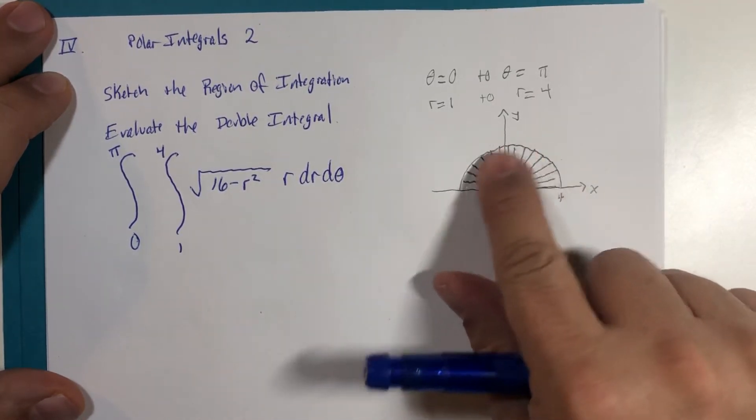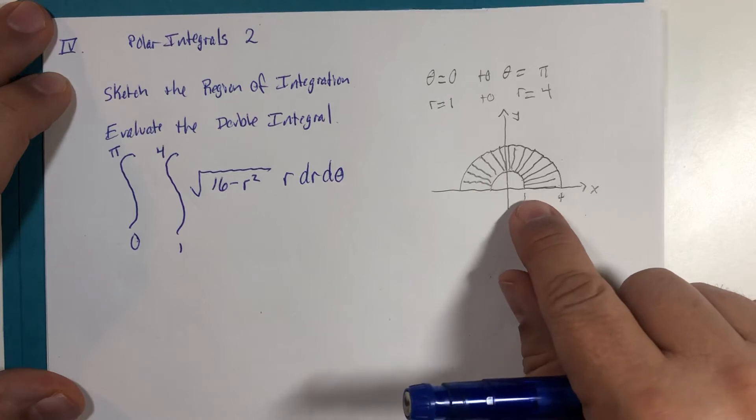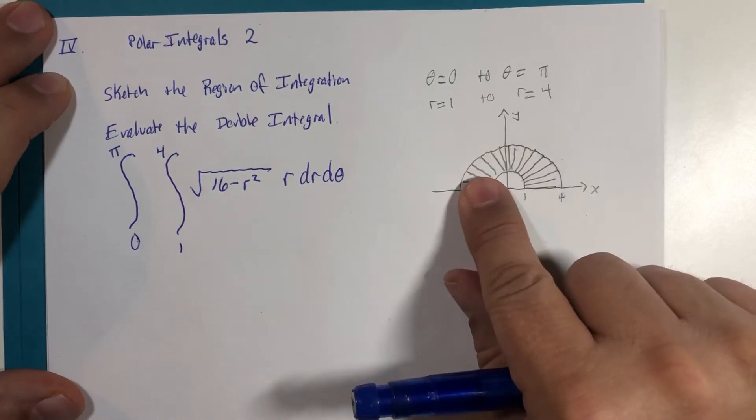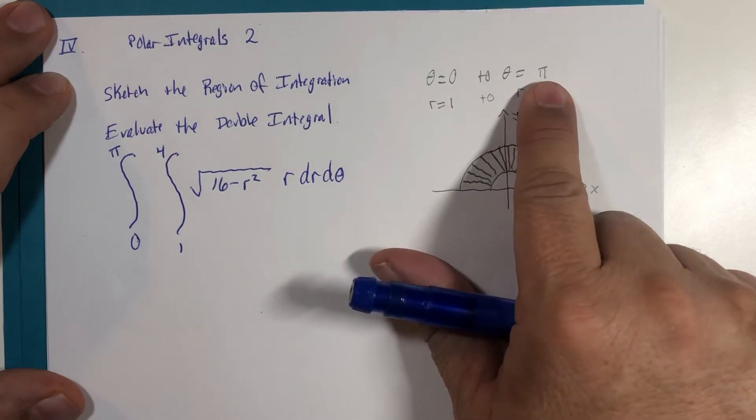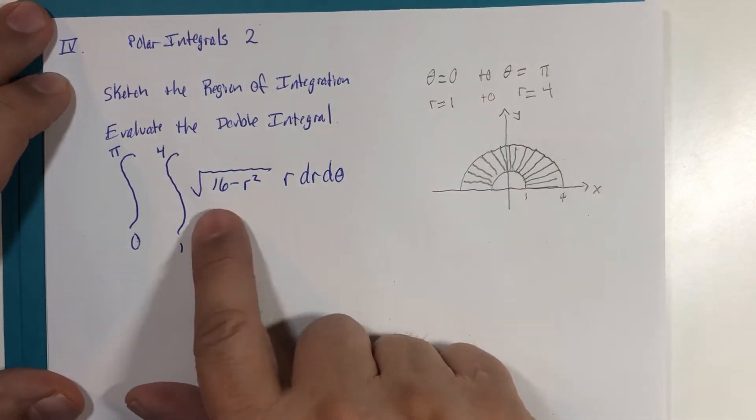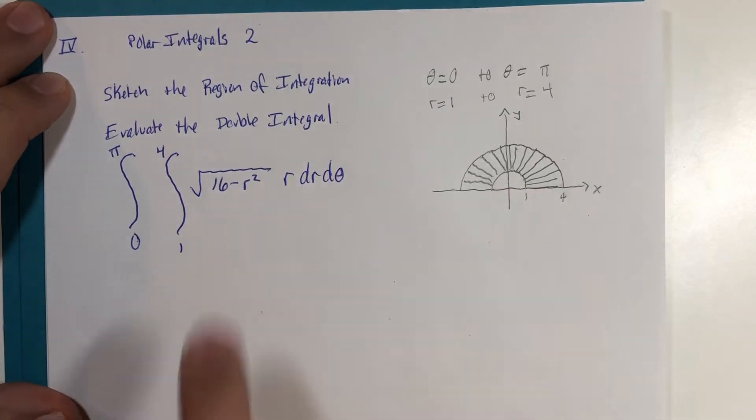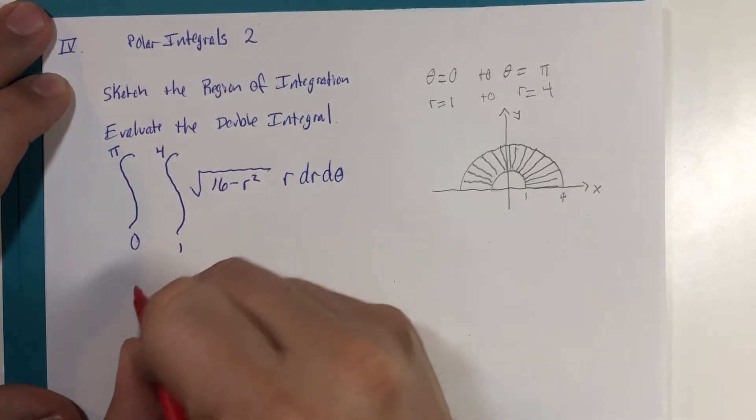This is our region of integration: outside of the small circle, inside of the big circle, but only the top half of the circle because theta dictates that. And then this right here is our third dimensional function. So there's your region. Now let's integrate. If we utilize a u substitution...